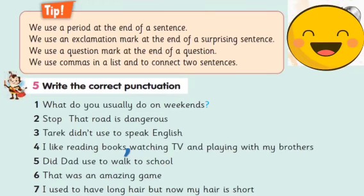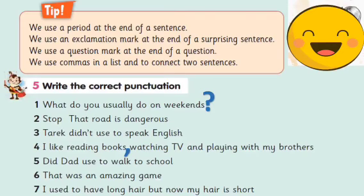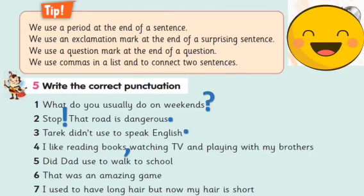Let's check your answers. Number one: 'What do you usually do on weekends?' - question mark, because it's a question. Number two: 'Stop!' - exclamation mark, because it's a surprising sentence. Number three: 'That road is dangerous.' - period, because it's a statement sentence.